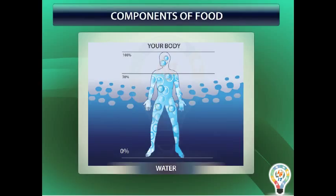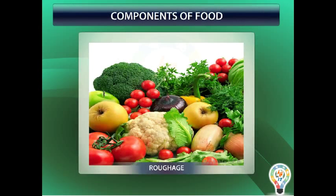Water makes up almost 70% of our body. Life processes cannot occur without water. Fruits and vegetables contain large quantities of water. Roughage is undigested carbohydrates present in foods, fruits and vegetables. Roughage adds bulk to our food.